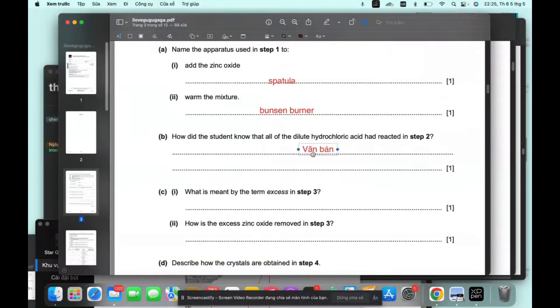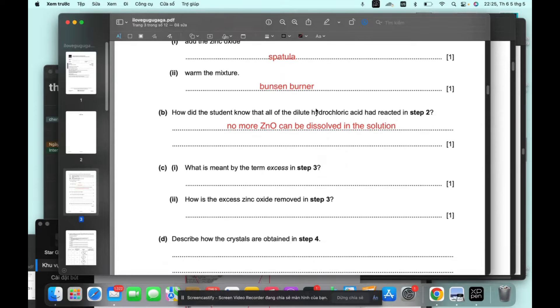How all the dilute hydrochloric acid has reacted to no more zinc oxide can be dissolved in this solution. Because if it has all reacted, there'd be no H plus ions left and therefore nothing could be dissolved.